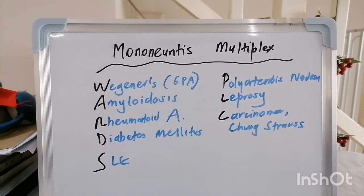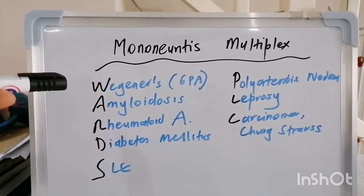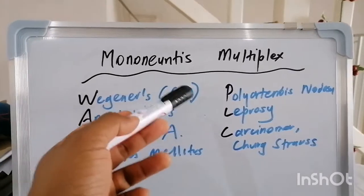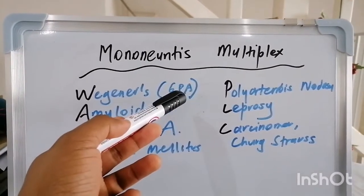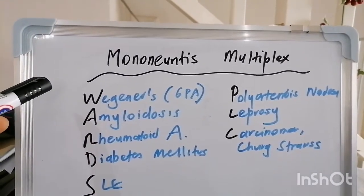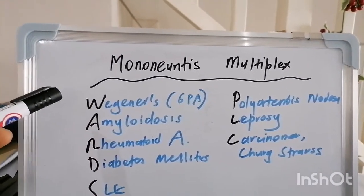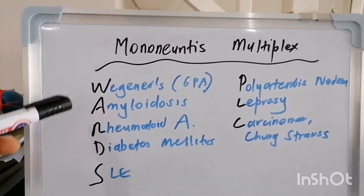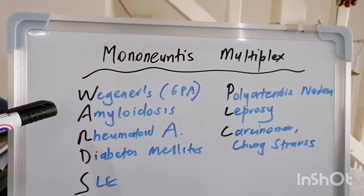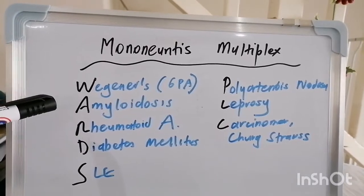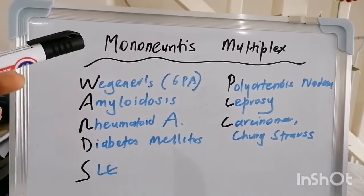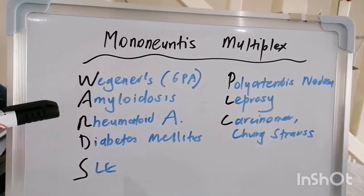The mnemonic is WADS PLC. W is for Wegener's — that's actually the old term; the nomenclature has now changed to granulomatosis with polyangiitis, which is an ANCA-positive small vessel vasculitic syndrome. A is for amyloidosis, which is an infiltrative disorder that can affect multiple organs, one of the manifestations being mononeuritis multiplex.